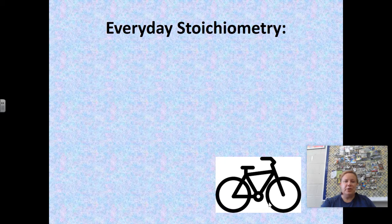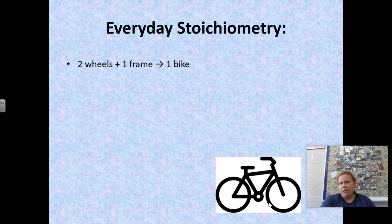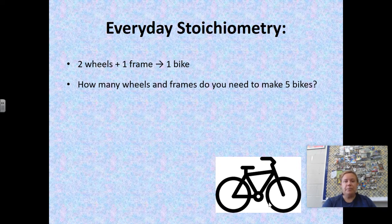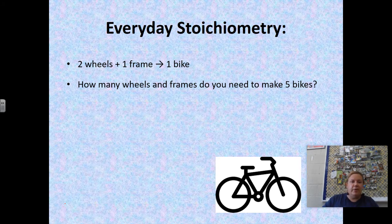Here are some everyday stoichiometry examples. If you are making a bike, two wheels and one frame makes one bike. If we wanted to make five bikes, we would need 10 wheels and five frames, because it takes one frame to make one bike.